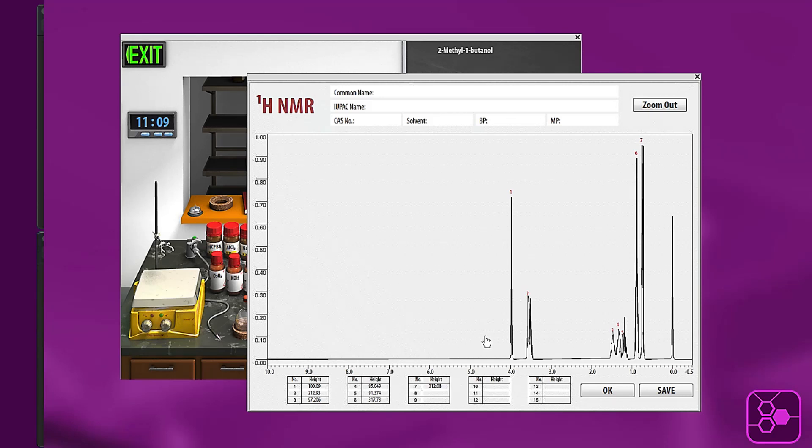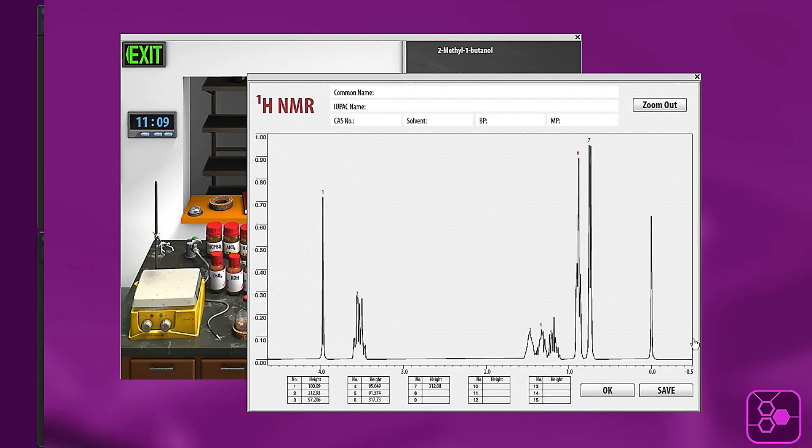You can also click and drag on the spectrum to zoom in. So in this case I'm going to zoom in below 5 ppm because there's nothing above that of interest. And it will give you a clear view of the peaks so that you can see splittings and so forth.